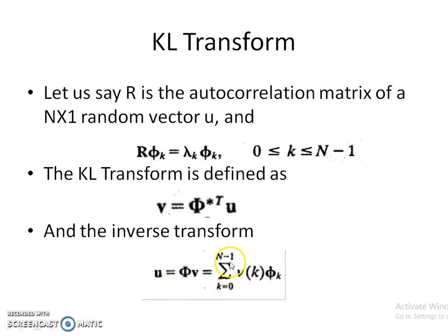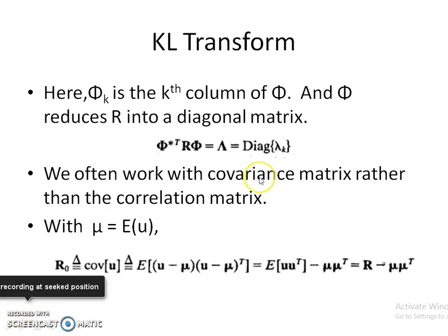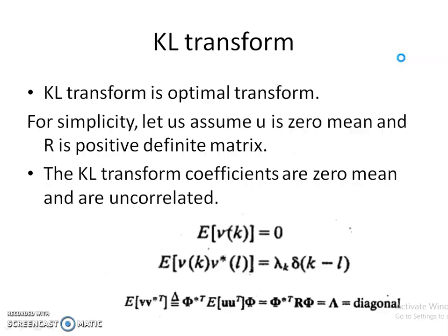Moving on — KL transform is an optimal transform. For simplicity, assume U is zero-mean and R is a positive definite matrix, so R = R₀. The KL transform coefficients are zero-mean and uncorrelated: E[V(k)] = 0, and E[V(k)·V*(l)] = λ_k·δ(k−l), which is non-zero only when k=l. Proof: E[V·V*^T] = E[φ*^T·U·U^T·φ] = φ*^T·R·φ = Λ. Since Λ is a diagonal matrix, all off-diagonal elements are zero, proving the coefficients are uncorrelated.